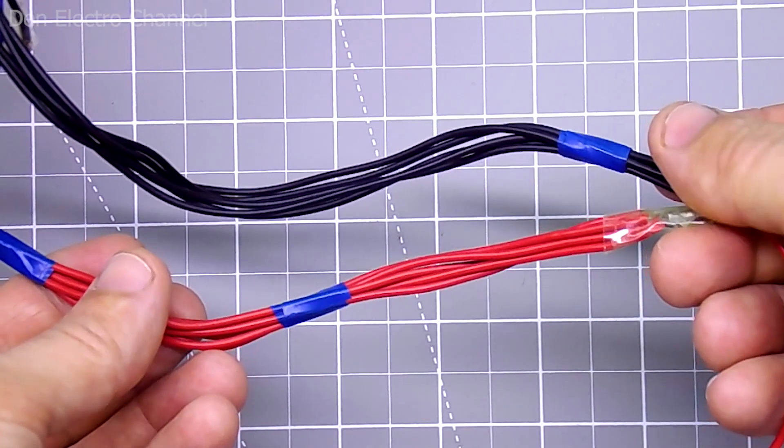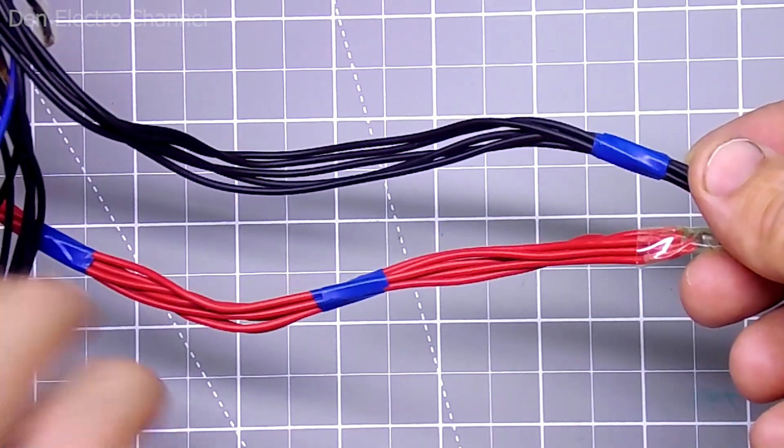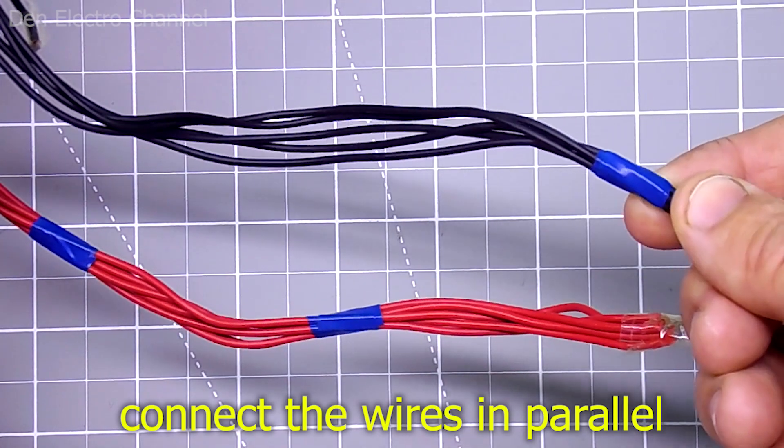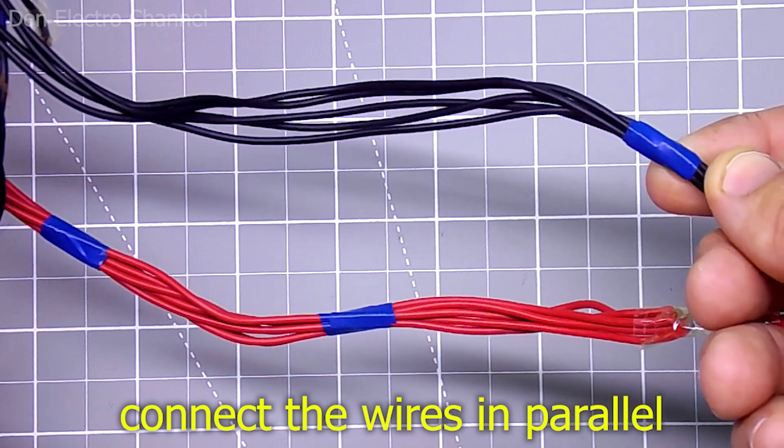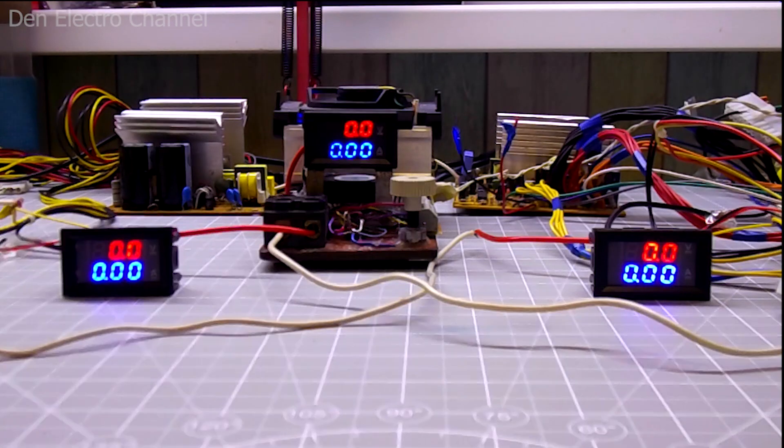Keep in mind that if you want to get large currents from such a connection, then on each power supply you need to use not one wire, but several. Since the wires are very thin and after 5 amperes, they will start to heat up. In addition, this will reduce the voltage drop on the wires.